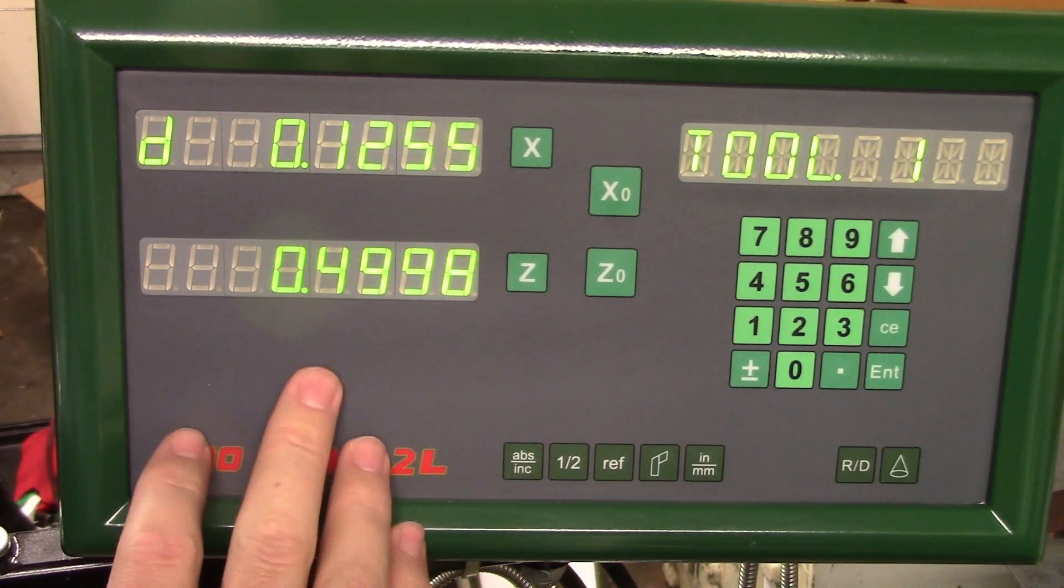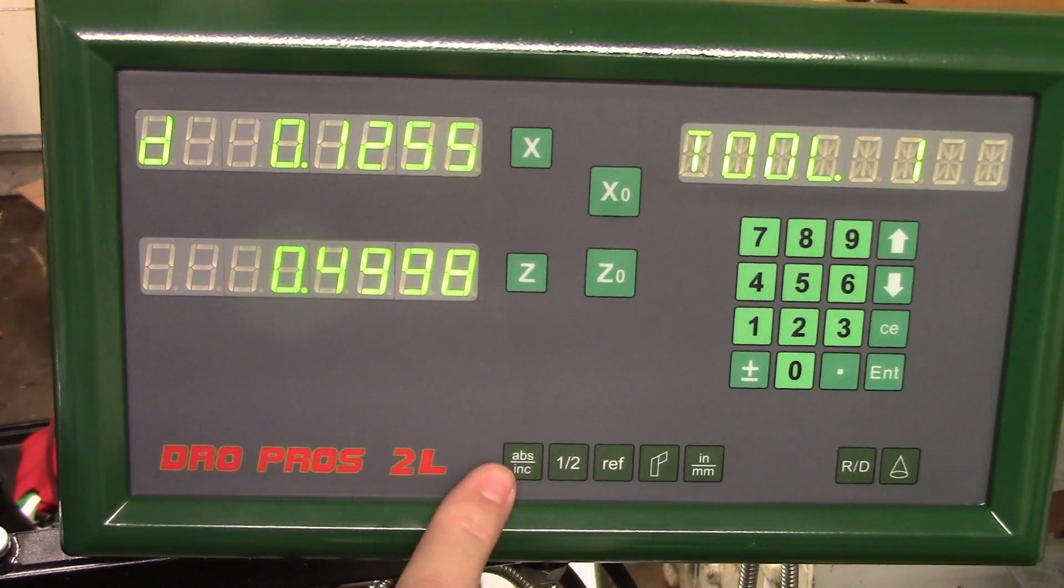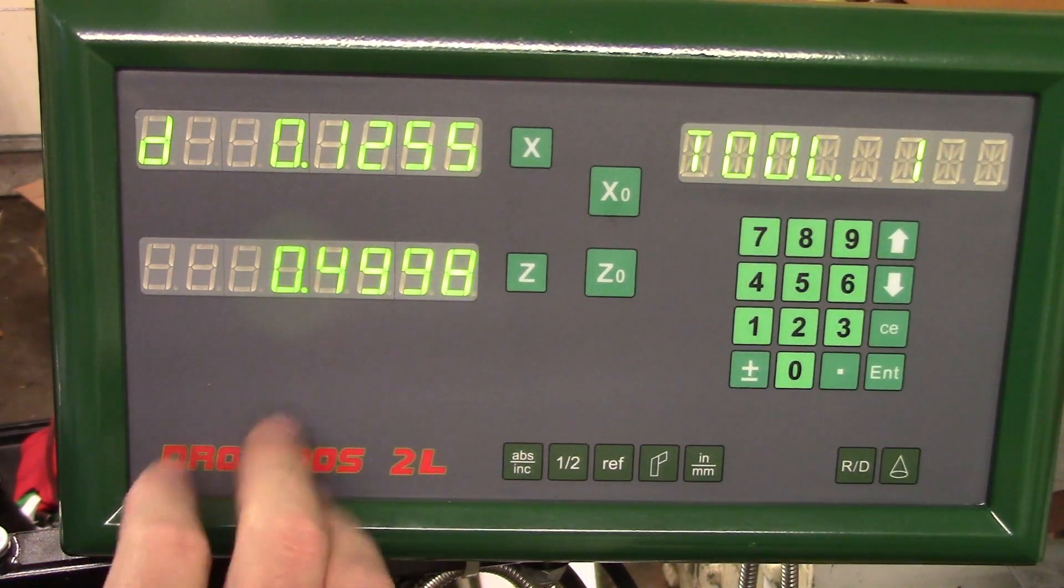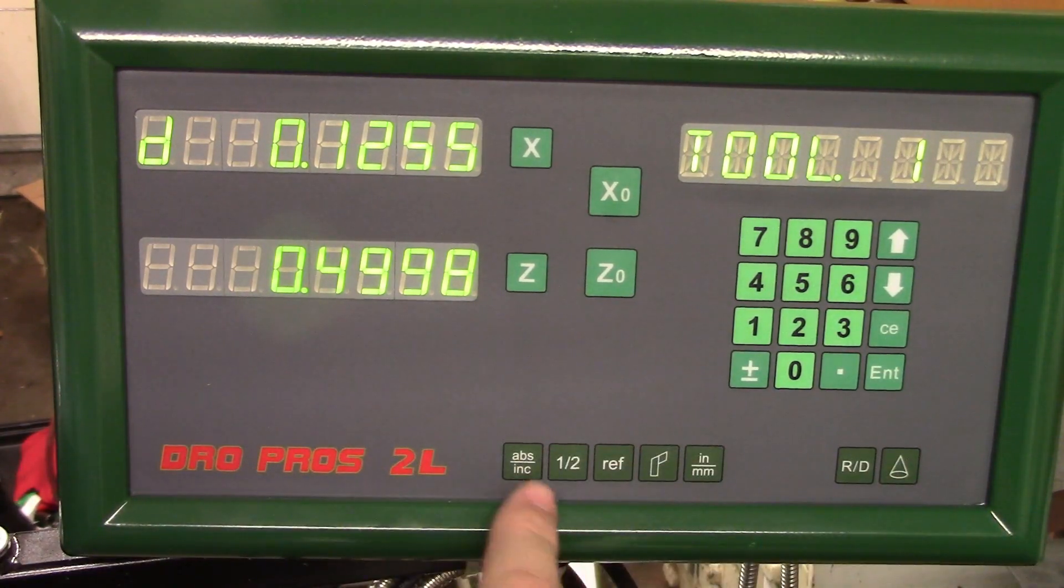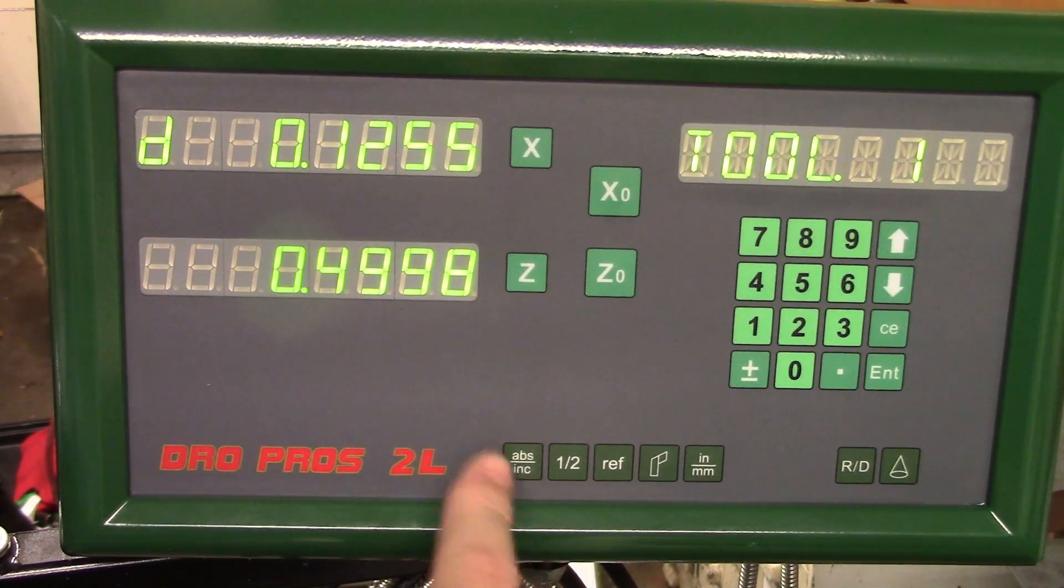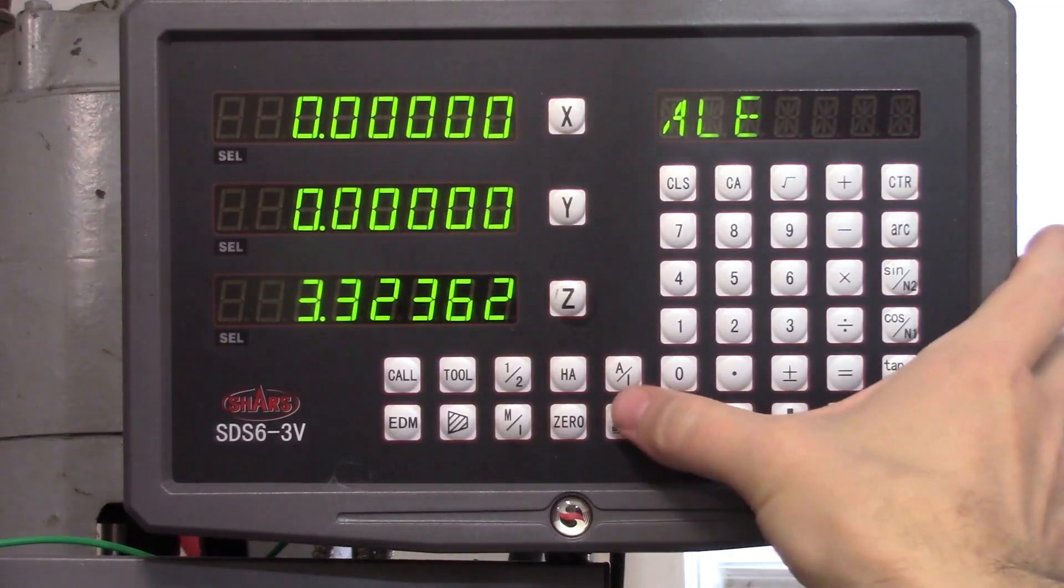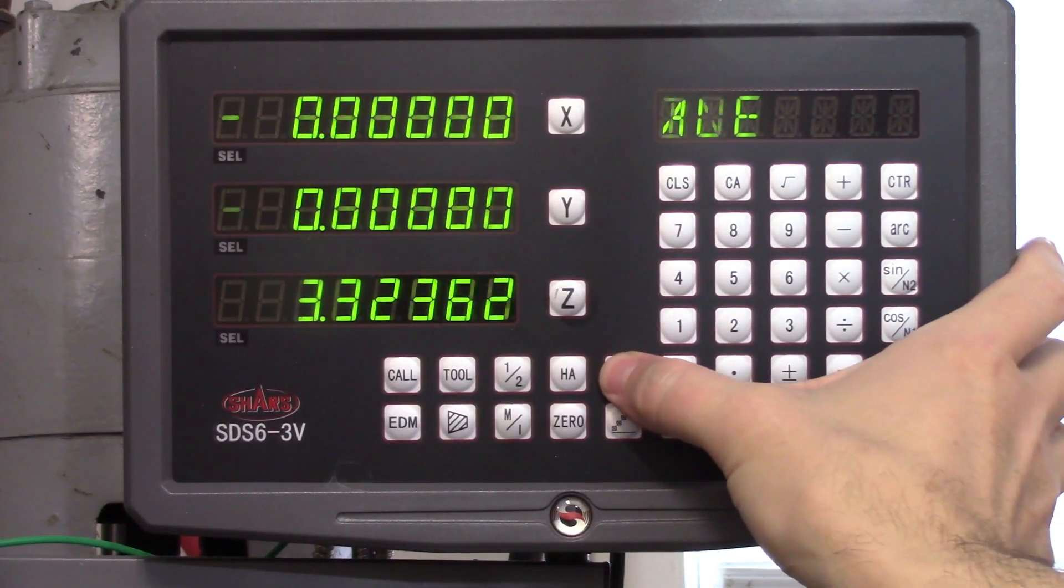First of all, every DRO out there has a button that will change between absolute and incremental modes. Of course what that button says depends entirely on the manufacturer, but it's usually something like the ABS/INC here on my lathe DRO or the A/I like you see on my milling machine.